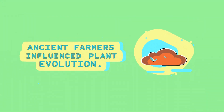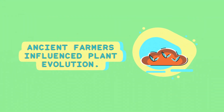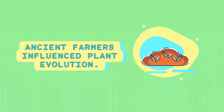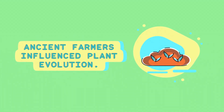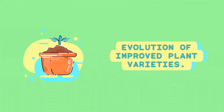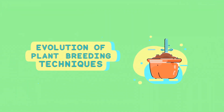Early farmers unknowingly practiced plant breeding by saving seeds from plants with the most desirable traits, such as larger fruits or higher yields. Over generations, this led to the development of new and improved varieties. Here's how plant breeding has evolved.